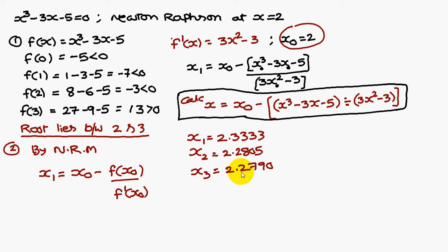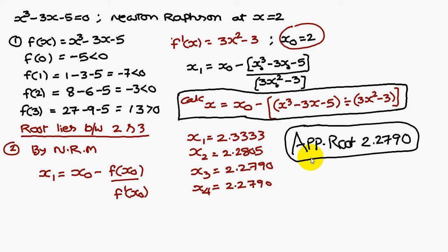Similarly, x₃ = 2.2790. x₄ = 2.2790. Therefore, x₃ and x₄ are the same values. The approximate root is 2.2790. Thank you.